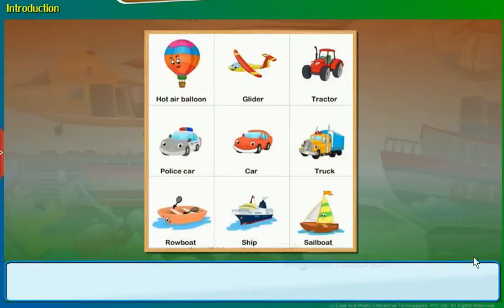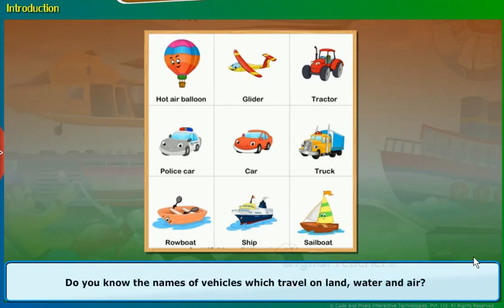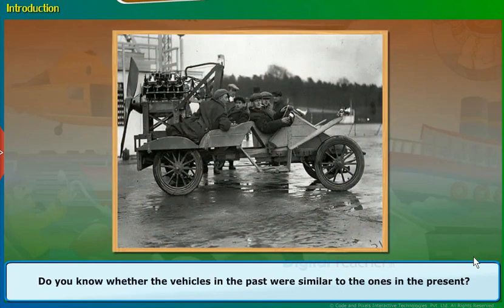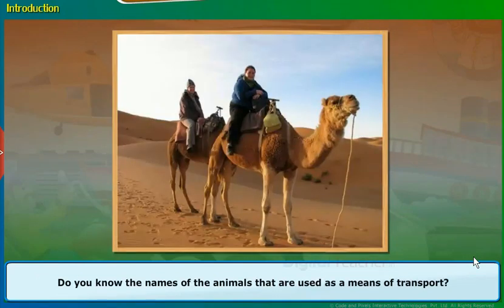Introduction: Observe the given image and answer the questions that follow. Do you know the names of vehicles which travel on land, water, and air? Do you know whether the vehicles in the past were similar to the ones in the present? Do you know the names of the animals that are used as a means of transport?